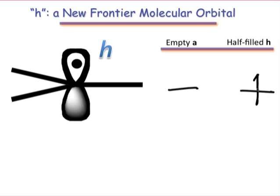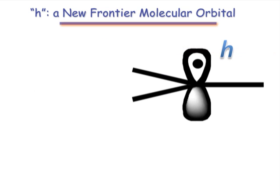However, it is unique in that it contains only one electron. Thus, it doesn't fit neatly into our characterization of frontier molecular orbitals as occupied or unoccupied. The h orbital is in a league of its own.